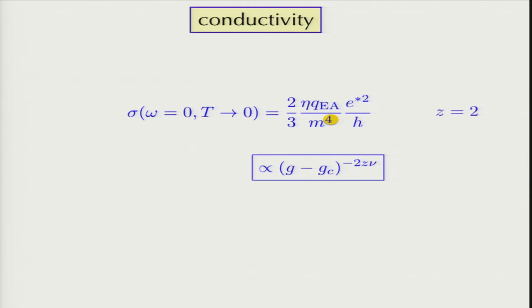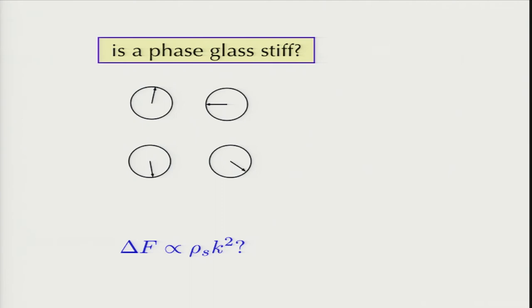So we have a metallic phase of bosons over a fairly wide range. The experiments give us this — they give you one value, but haven't really determined what z is. It would be interesting to independently determine z or infer it from another measurement. One of the questions that always came up with this phase glass: is it stiff? Is it still a superconductor? If it is, then everything I told you is irrelevant because that order will win out.